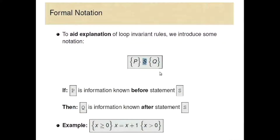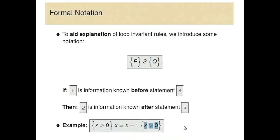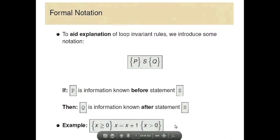The statement itself doesn't have to be just one statement — it could actually be a bunch of statements put together in a sequence. We can then think about what we know before and what we know after. So just a really simple example: what we know before is x is greater than or equal to zero, the statement is x equals x plus one, and what we know after is x is greater than zero. If we wanted to be more precise, we'd use versioning, but this is the rough effect.